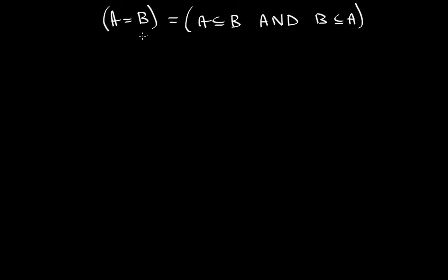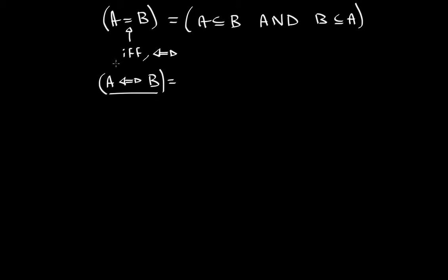...you also have to understand that this equal sign can be replaced by if-and-only-if, which is the double-sided arrow. So we are basically saying A implies B, and B implies A. And since those two things are equal, they must both hold.